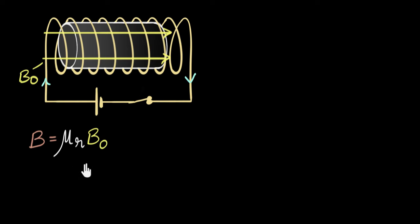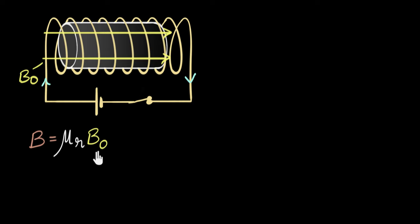Although this relationship works for paramagnets and diamagnets, it does not work for ferromagnets. For ferromagnets, the relationship is actually quite more complicated. To truly understand this relationship, we need to study something called the hysteresis graph.